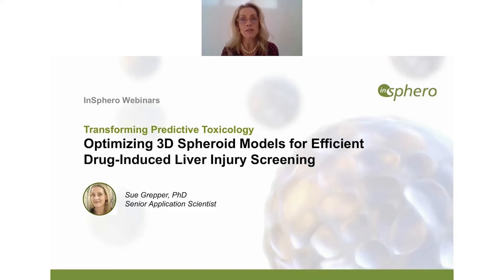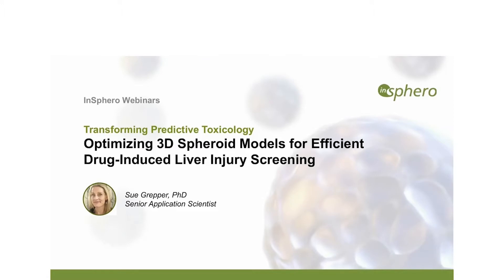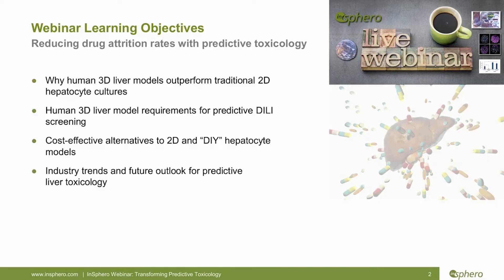As an attendee, you can ask questions at any point during this webinar, and I will get to them at the end. What I'd like to share with you today is, first and foremost, how the liver toxicology field is moving toward more predictive models to lower liver toxicity-induced drug attrition rates. I'll show how human 3D liver models consistently outperform traditional 2D hepatocyte cultures, and I'd also like to dispel the myth that 3D models are very expensive. Lastly, I'd like to share some new industry trends for predictive liver toxicology.